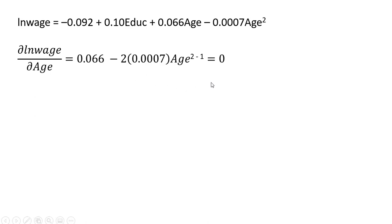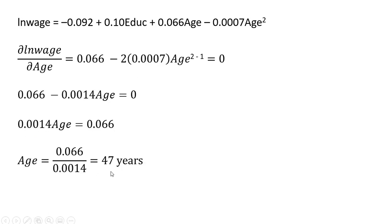Trying to find where we're at the top of the hill where the slope is zero. So simplifying a little bit and dividing through by 0.0014, the age in which earnings are maximized is 47 years. So 47 years old is where peak earnings occur.